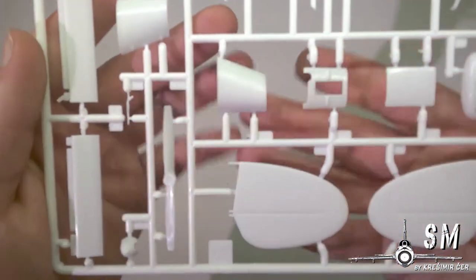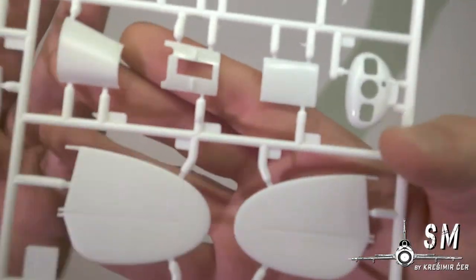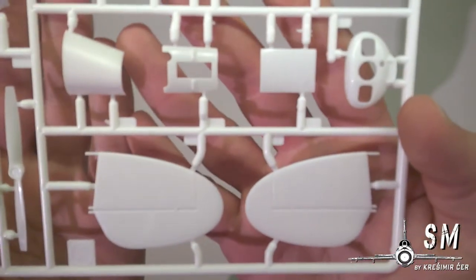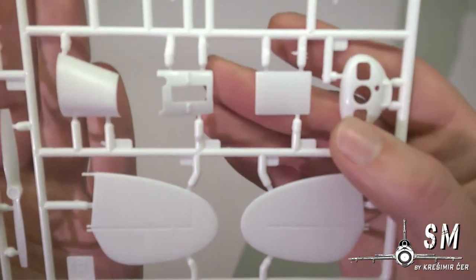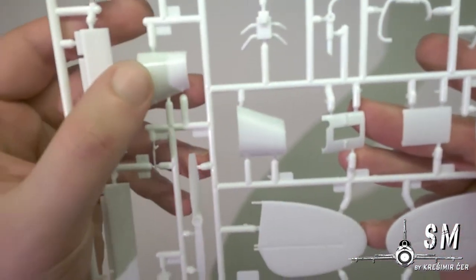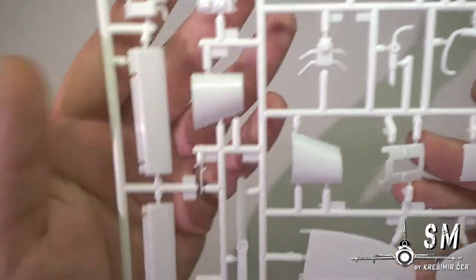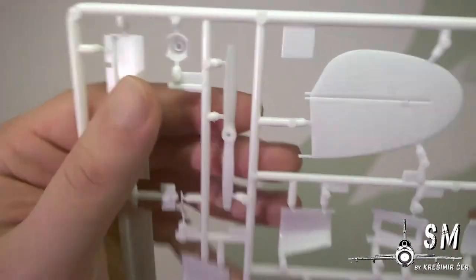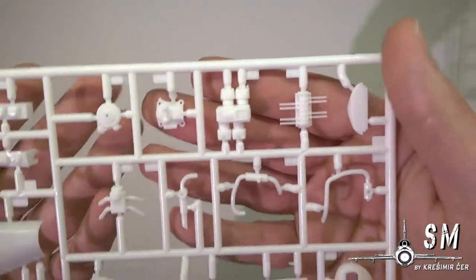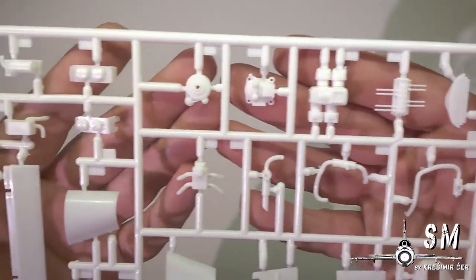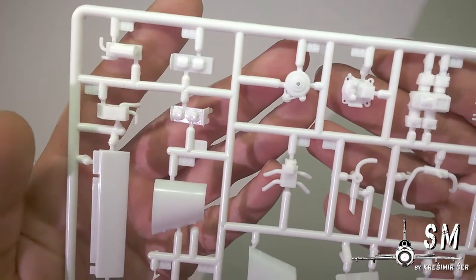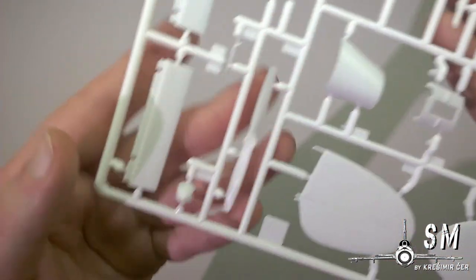Then we have our tail section, horizontal stabilizers. We have our engine cowling, side. I think these are flaps, not sure probably. Propeller and the engine parts.